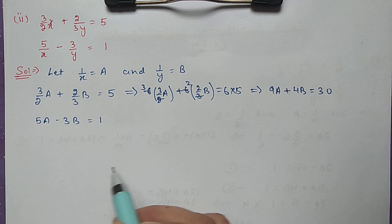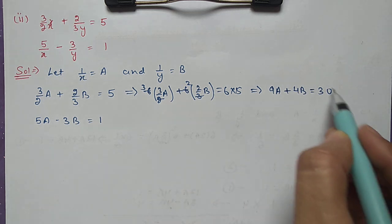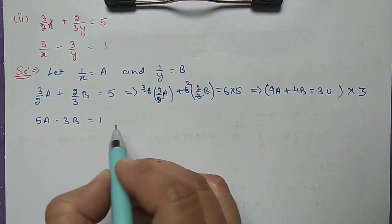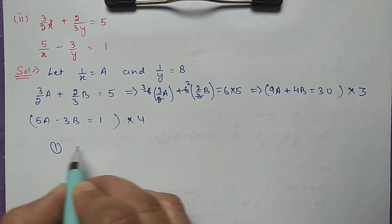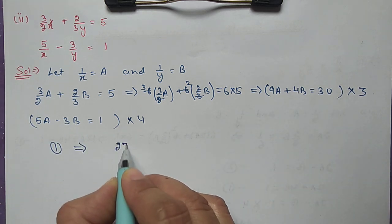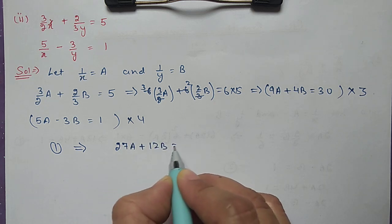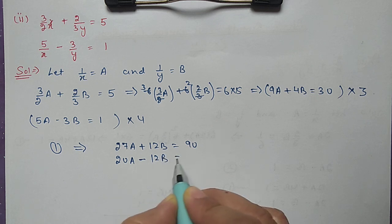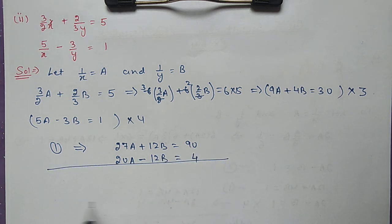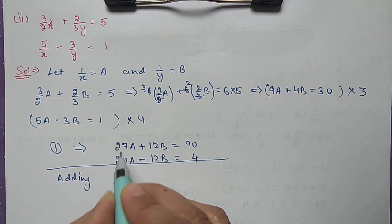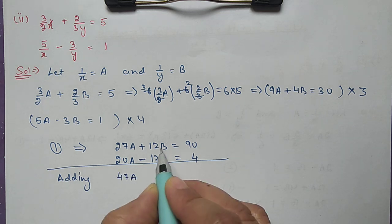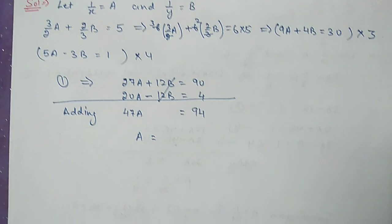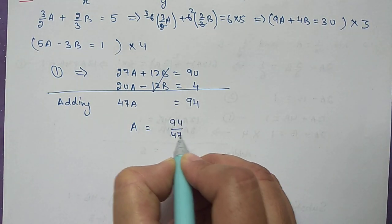The second equation is 5a minus 3b equal to 1. We need to make the coefficient of b equal in both equations. Here it is 4 and there it is 3, so we multiply the first equation by 3 and the second by 4. The first equation becomes 27a plus 12b equal to 90, and the second becomes 20a minus 12b equal to 4. Now b coefficients are the same; adding the two equations gives 47a equal to 94, so a equals 94/47, which cancels to give a equal to 2.